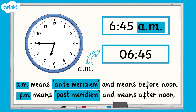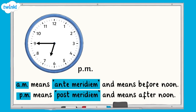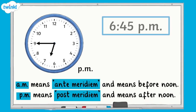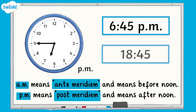Instead, a 24 hour digital clock will always show two digits to represent the hours. This analogue clock shows the time 6.45 PM. On a digital 12 hour clock, it would look like this. On a 24 hour digital clock, it would look like this.